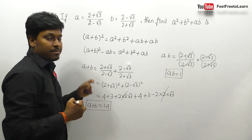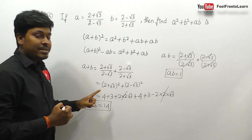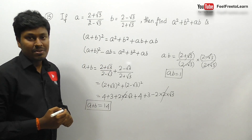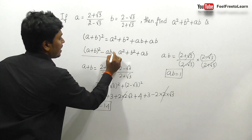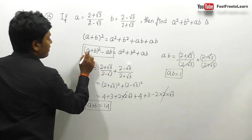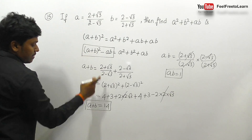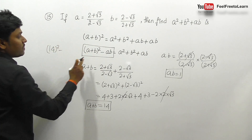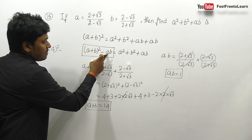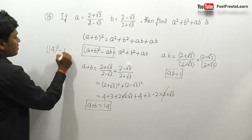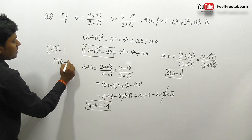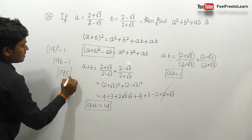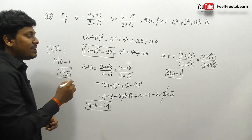Now substituting: a² + b² + ab = (a+b)² - ab = 14² - 1 = 196 - 1 = 195. The answer for question number 15 is 195.